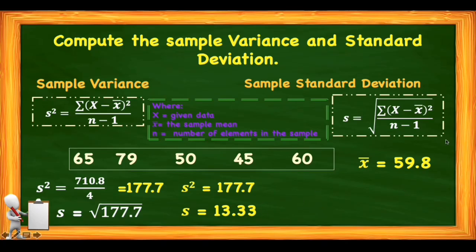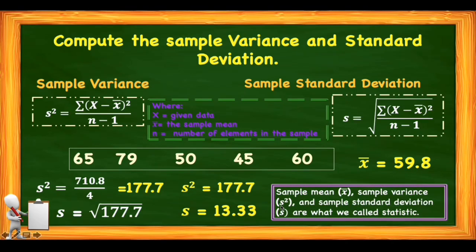Let's recap: our sample mean is 59.8, our sample variance is 177.7, and our sample standard deviation is 13.33. We can say that sample mean, sample variance, and sample standard deviation are what we call statistics.